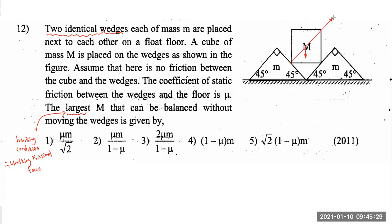Since the cube has a square cross-section, capital M is in contact with both wedges. Perpendicular to each contact surface, there will be reaction forces. Let's call them R1 and R2. Now R1 and R2 must be equal because the system is symmetric — two identical wedges at the same angle — so the object is symmetric and uniform.